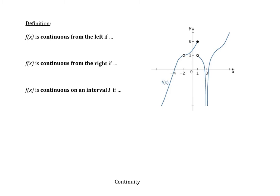When we talk about continuous from the left, we can express it as: the limit as x approaches A from the negative side of f of x equals f of A. Looking at this picture, if I look at the value of one, when I come from the left, where the function looks like it's going is six, and what the function is actually equal to is six. So at x equal to one, this is continuous from the left.